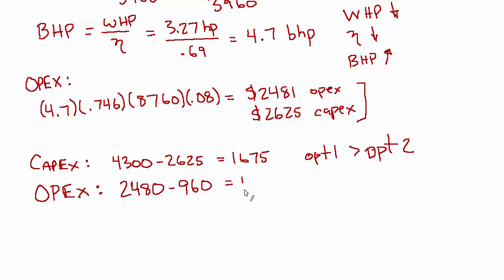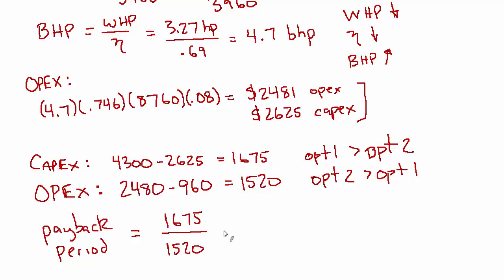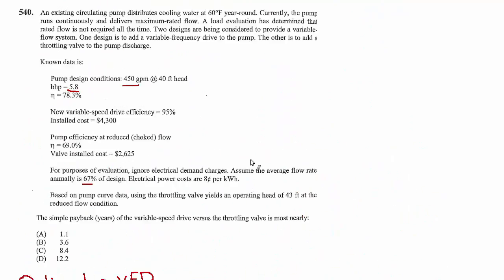So that's an annual savings of 1520 where option two is more expensive than option one. So the payback period then is the amount of time that it takes to make up for the difference in the initial cost, the 1675. So right after the initial cost, you're down 1675 if you went with option one. But you're going to save 1520 just in the first year and every year thereafter. So it only takes 1.1 years to break even. And then after that, you're saving more and more. So the best choice is A.